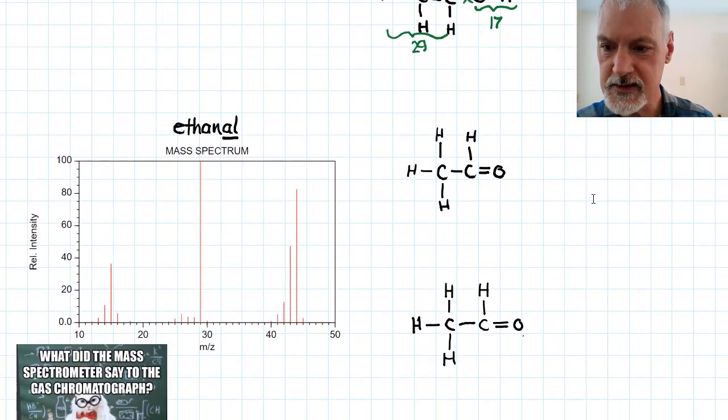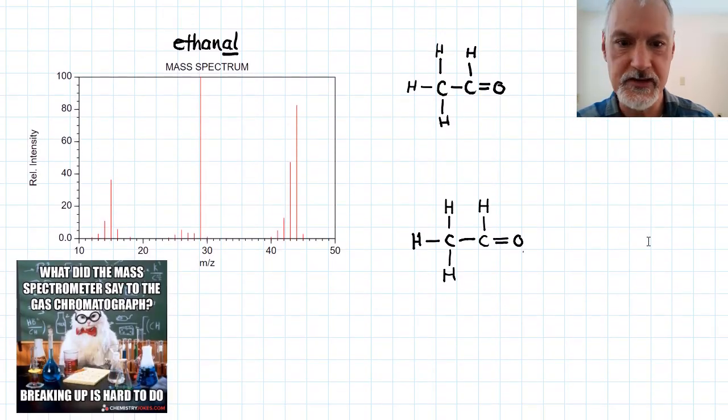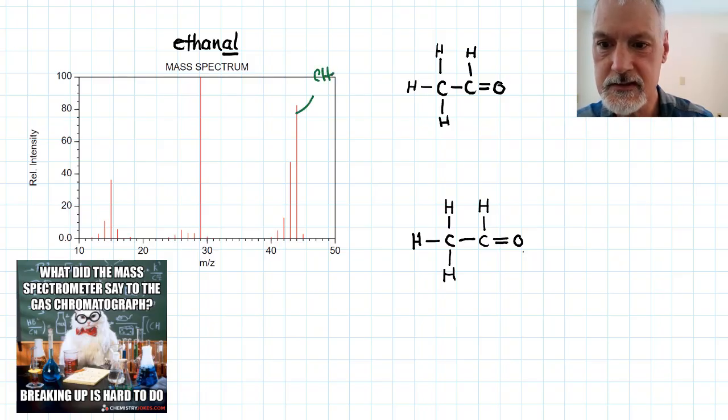Let's look at the difference with the substance ethanol versus ethanal. I have here the structure of ethanal, an aldehyde indicated by the doubly bonded oxygen at the end of the chain. This has a molar mass of 44. So right here, that's due to our entire species making it through without fragmenting. The loss, perhaps, of that hydrogen can lead to the next peak. This would be due to CH3CO.